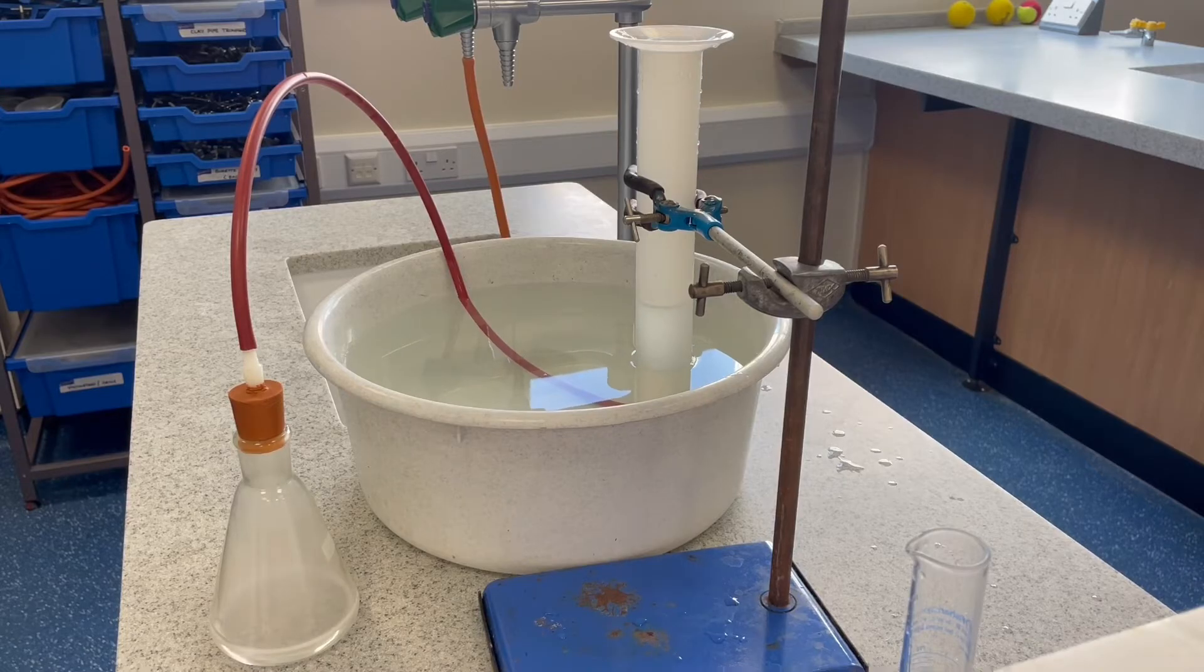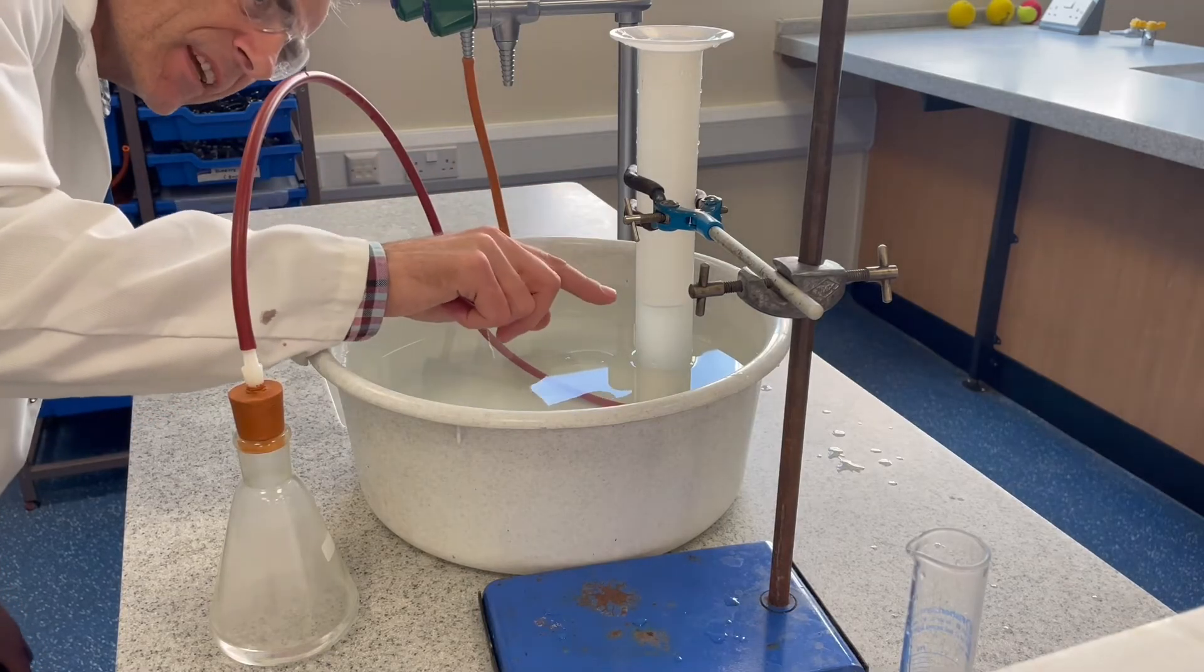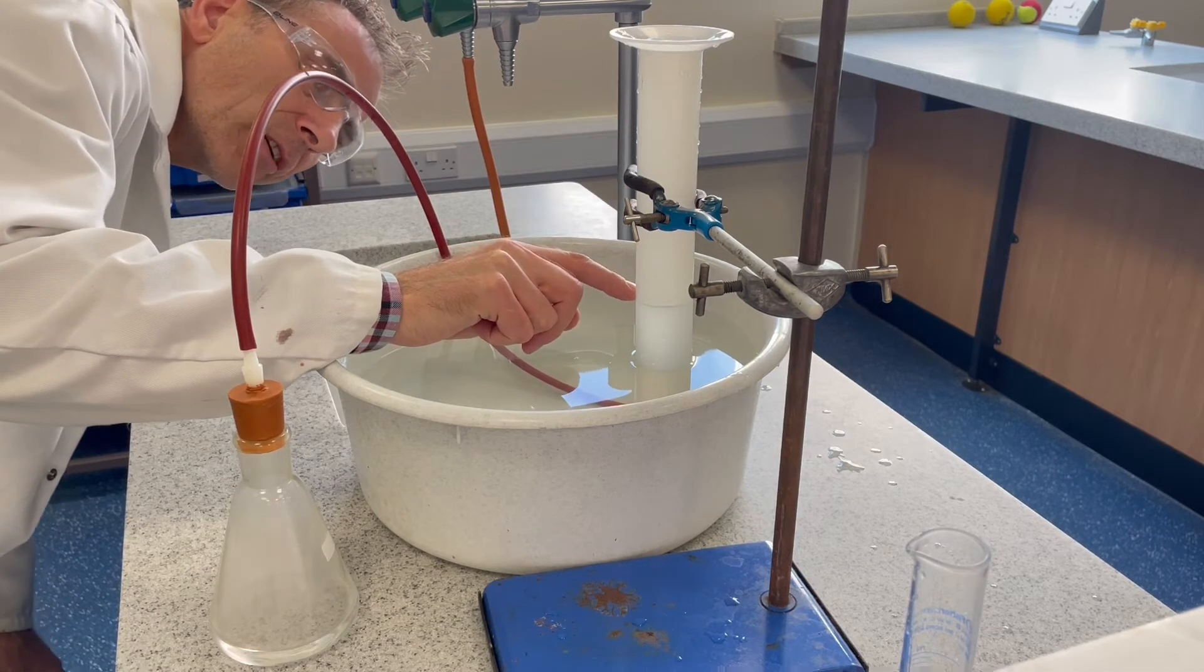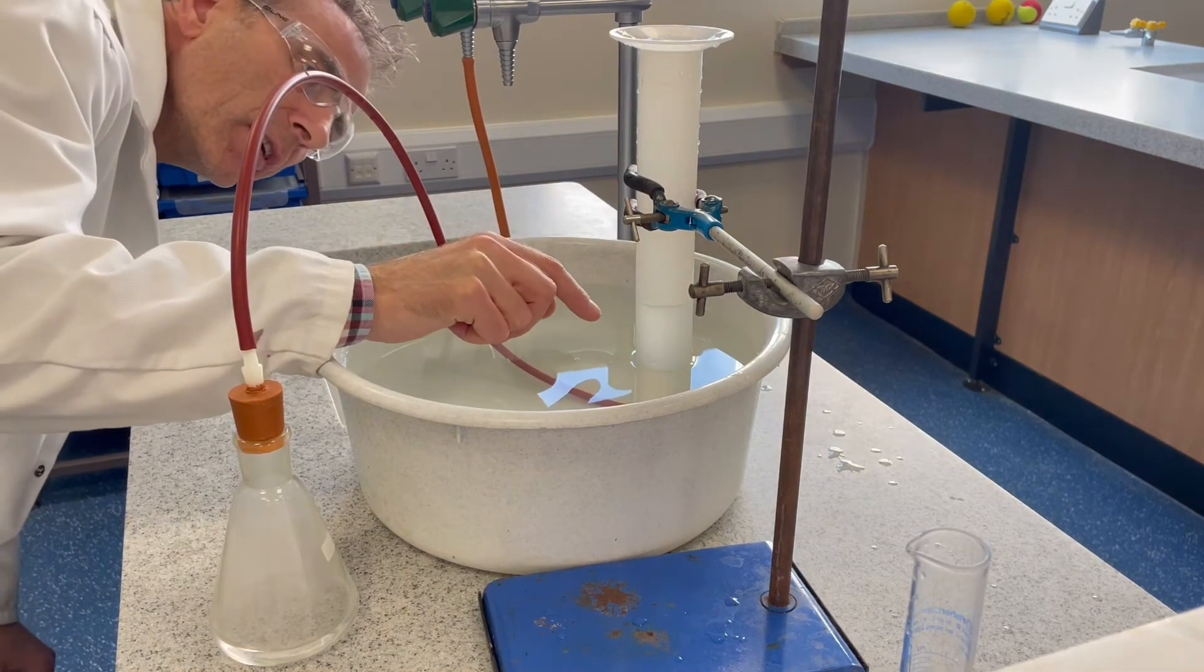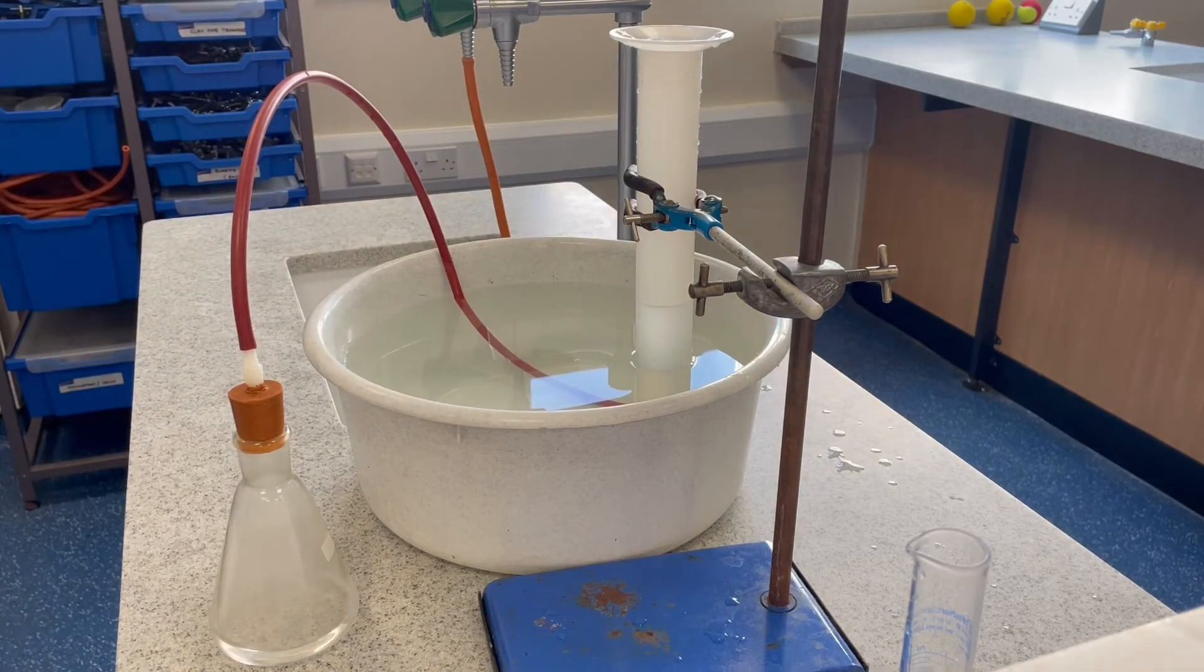We'll just wait for the last of the bubbles to form. Slowing right down now. I'm just going to read the measuring cylinder with the gas in. Remember this is hydrogen gas. I've got to read it upside down which is a little bit tricky. It's 170, 180, it's got 184 cm³ of hydrogen in, so I'll just write that down.